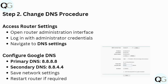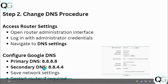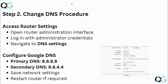To change your DNS, access your router settings and open the router administration interface. Log in with your administrative credentials and navigate to the DNS settings. Configure Google DNS: your primary DNS is 8.8.8.8 and your secondary DNS is 8.8.4.4. Save the network settings and restart your router if required.